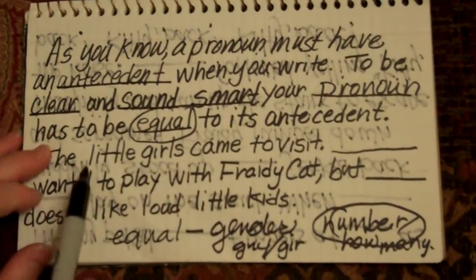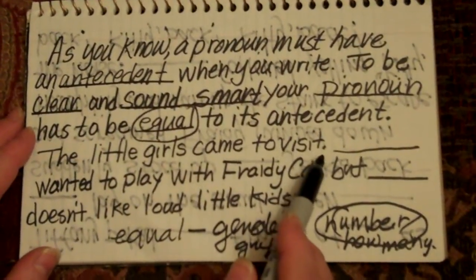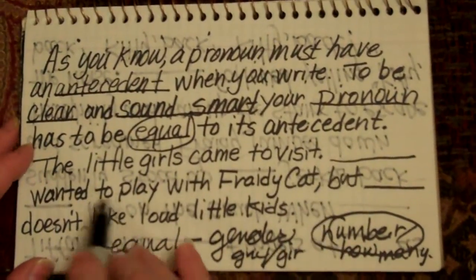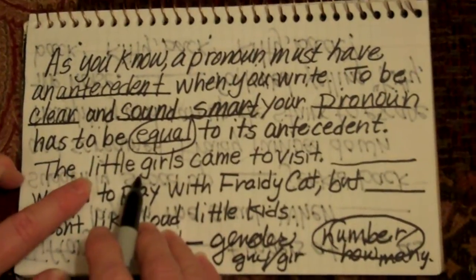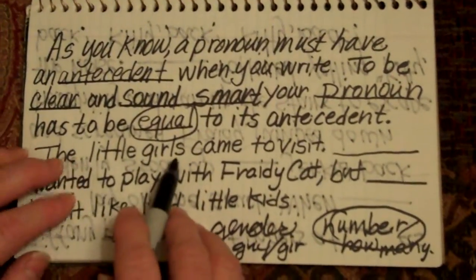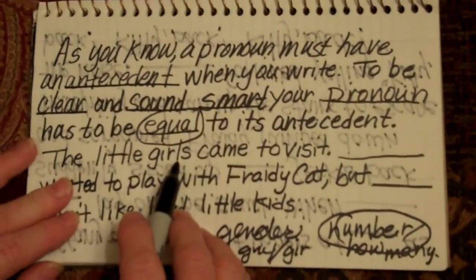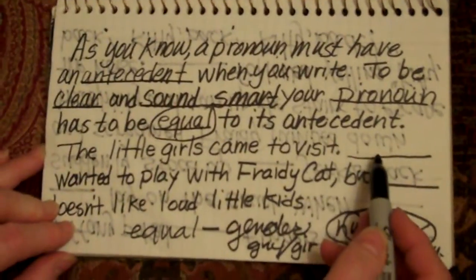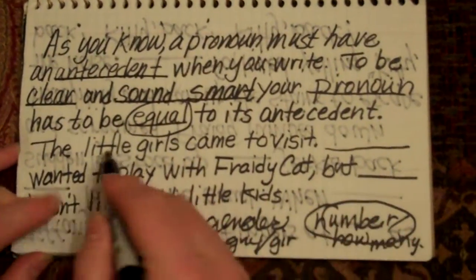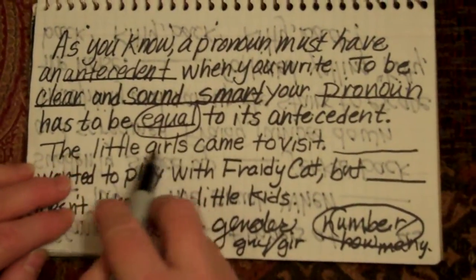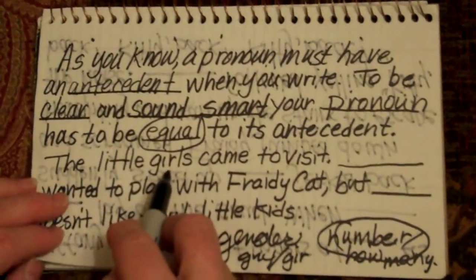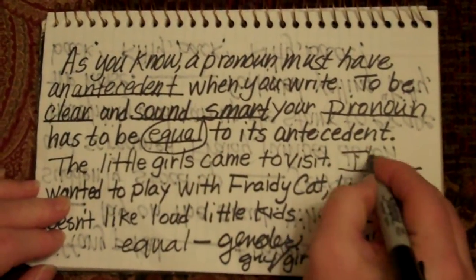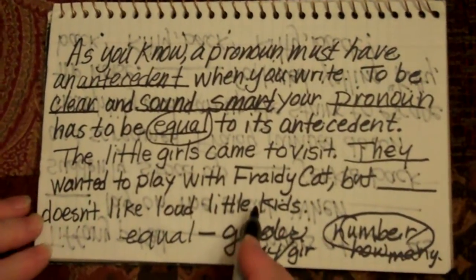Here's an example: 'The little girls came to visit.' I need a pronoun here because I want to start talking about the little girls. I don't want to repeat 'the little girls wanted to play with Frady Cat.' I'll need something that is plural because these people are more than one — the antecedent is more than one. Girls is more than one, so I'll put 'they.' They wanted to play with Frady Cat.